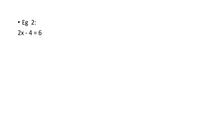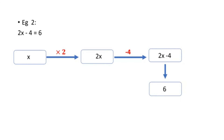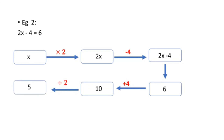The second flow diagram example is 2x minus 4 is equal to 6. Draw a box with x; x is multiplied by 2, so draw an arrowhead 'multiply by 2' giving 2x. Then minus 4, so draw an arrowhead 'subtract 4' giving 2x minus 4, which equals 6. Going in reverse: instead of minus 4 we put plus 4, so 6 plus 4 is 10; instead of multiply by 2 we divide by 2, so 10 divided by 2 gives x equals 5. Verification: 2 into 5 is 10; 10 minus 4 is 6 — answer is correct.